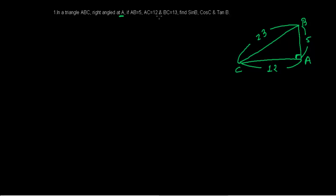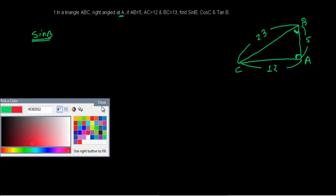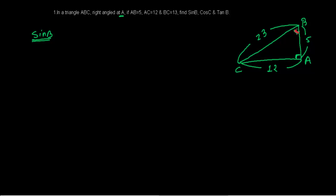Now we have to find sin B first. Sin B means we are taking angle B as the reference angle. For this situation, what is the perpendicular, what is the hypotenuse, and what is the base — we have to find out first.